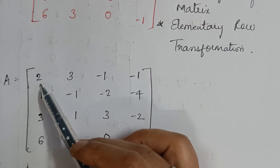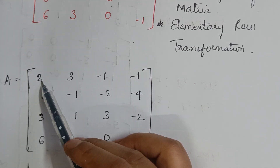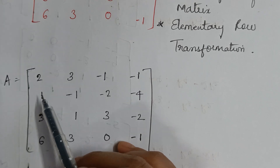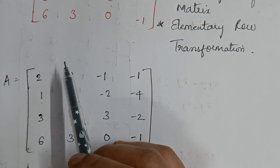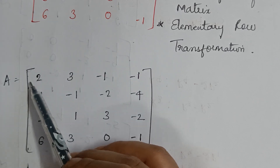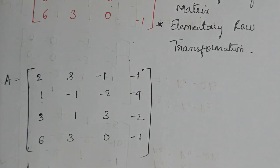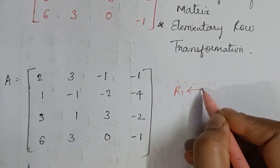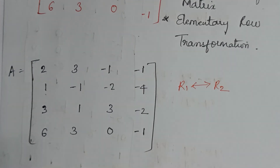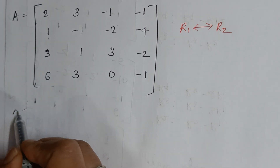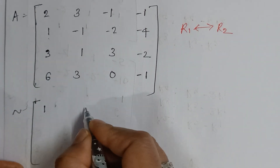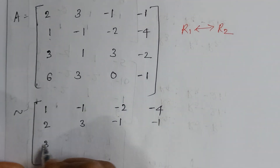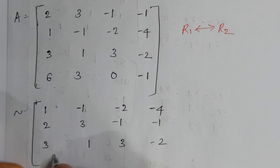The rule of echelon form is that the first element of the first row in the first column has to be 1, but here we have 2. However, in the next row the first element is 1, so I can simply interchange the rows. I'll interchange row 1 with row 2. After doing this, the matrix becomes: 1, -1, -2, -4 / 2, 3, -1, -1 / 3, 1, 3, -2 / 6, 3, 0, -1.